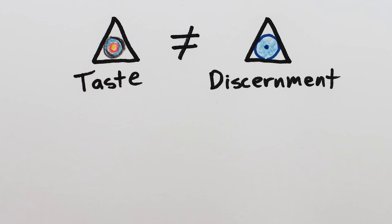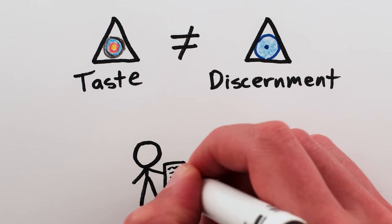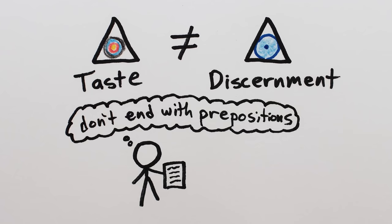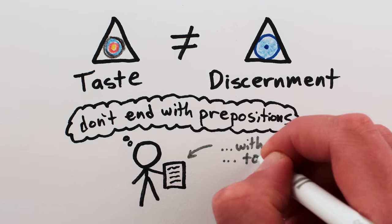But it's also possible to be discerning without letting it affect your taste. Like how a writer can know about and still ignore general concepts about prepositions and not using them to end sentences with. I mean, like how a writer can know the practice of not ending sentences with prepositions, but still decide it's a place worth going to.